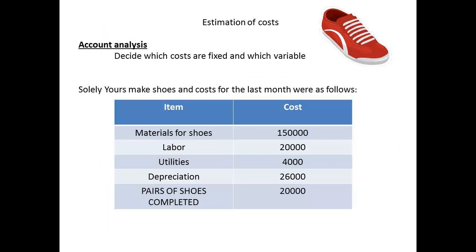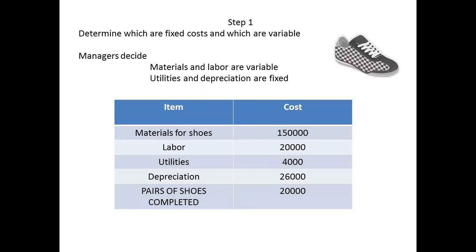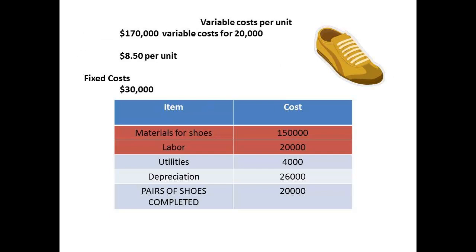Consider a worked example for Solely Yours, a manufacturer of shoes. The figures show costs for materials, labour, utilities, and depreciation, and give the number of pairs of shoes produced. The first step is to determine which costs are fixed and which are variable. Materials and labour are treated as variable costs, whilst utilities and depreciation are considered fixed costs. There is a total of $170,000 for variable costs shared between 20,000 pairs of shoes, giving a variable cost per pair of $8.50. The sum of the fixed costs is $30,000.